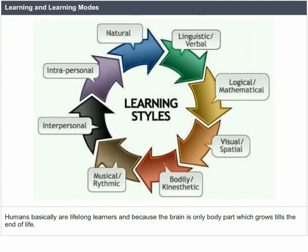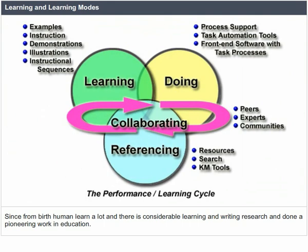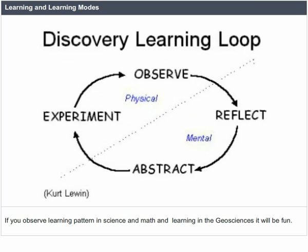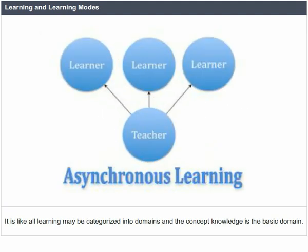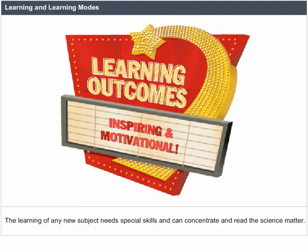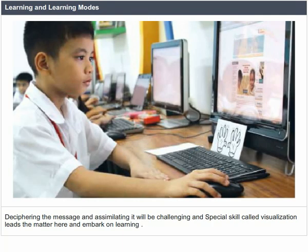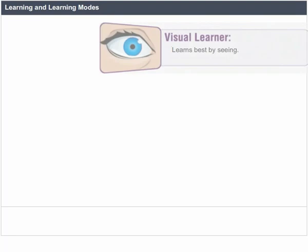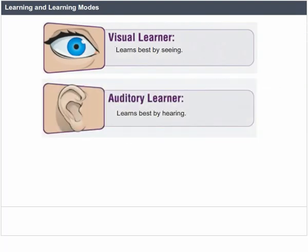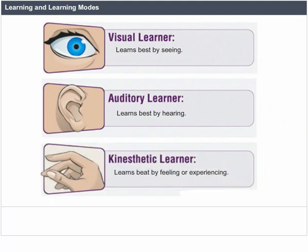Humans are basically lifelong learners because the brain is the only body part which grows until the end of life. Since birth, humans learn considerably. Learning in science, math and the geosciences can be categorized into domains — concept knowledge is the basic domain. The learning of any new subject needs special skills such as visualization. Visual learners learn best by seeing, auditory learners by hearing, and kinaesthetic learners by feeling or experiencing.